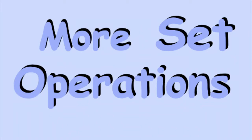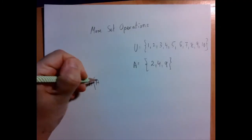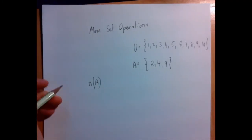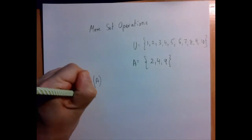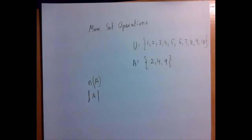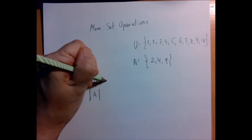So this is something I owe you for some time ago. The cardinality of a set is the number of elements in it. This is a notation for the number of elements, or this. They're both all over the place, so you can use either one of them in writing, but you should understand both of them when you read it.